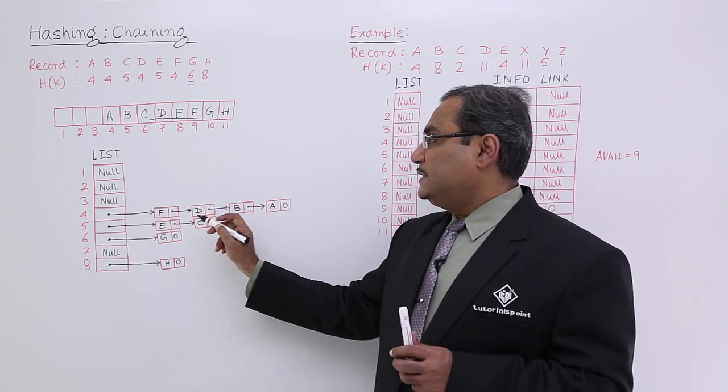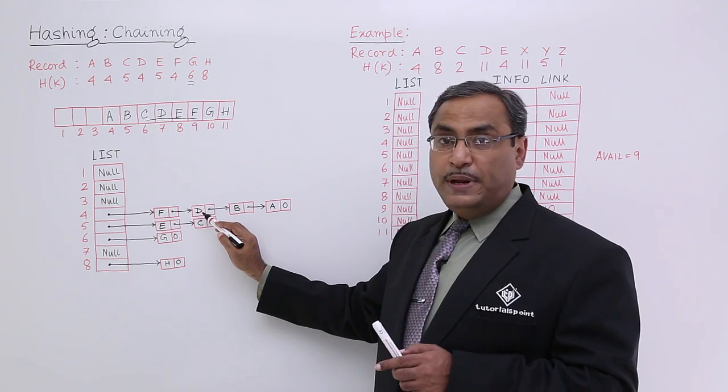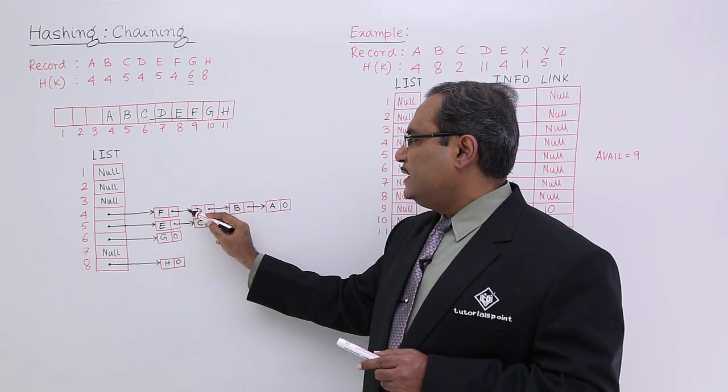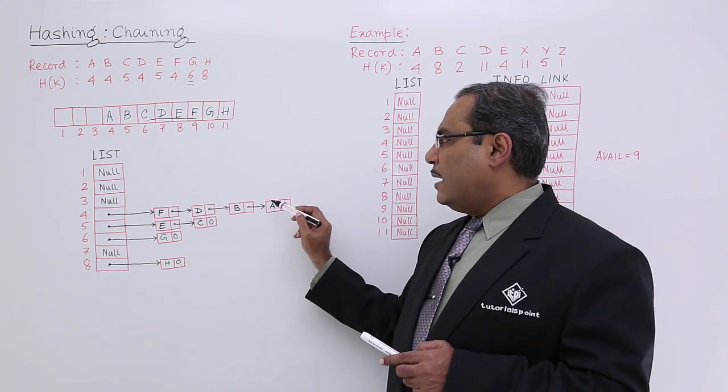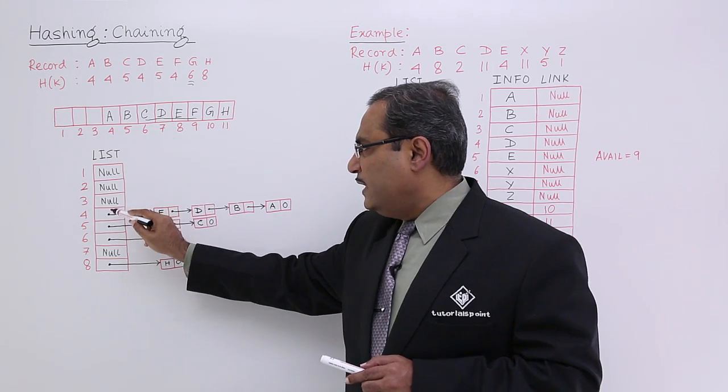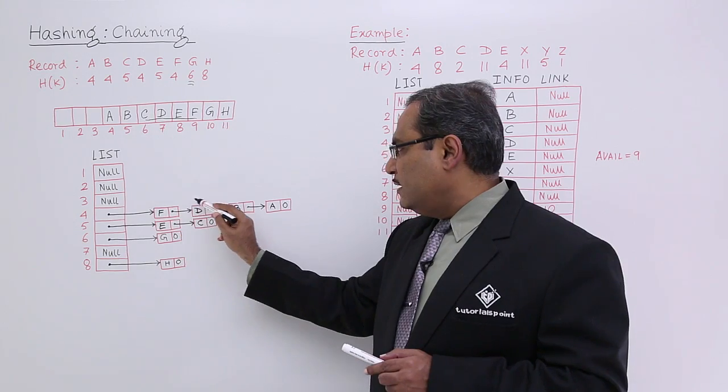That is why at first A was there, then B came, after B, D came. So it has got prepended, not appended, and then after that F came. Now that is the ultimate chain and all these records are having the H of K equal to 4. So from the fourth location of this list, we are having the starting address of this linked list and then I can traverse in this way.